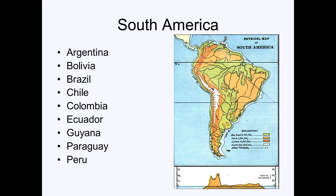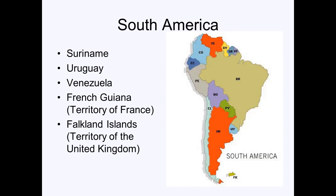The countries of South America, alphabetized, are: Argentina, Bolivia, Brazil, Chile, Colombia, Ecuador, Guyana, Paraguay, Peru, Suriname, Uruguay, and Venezuela. There are also two territories: French Guiana, a territory of France, and the Falkland Islands, a territory of the UK. There are also some other islands near South or Central America not included here.